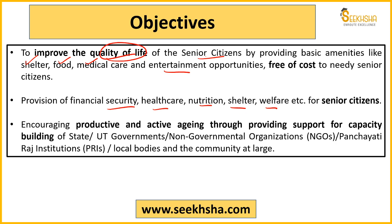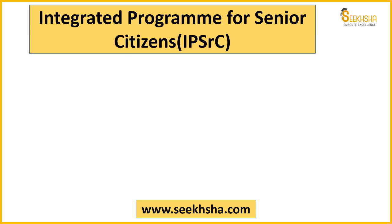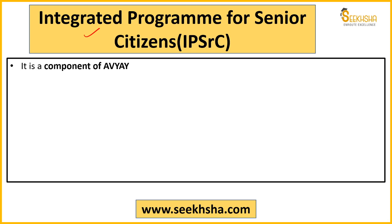इस scheme का एक सबसे important component है सबको साथ लेकर चलना — यानी productive and active aging को promote करना। Aging को रोका नहीं जा सकता, इसलिए capacity building की जरूरत है। Central government अकेले नहीं कर सकती, इसलिए state governments, NGOs, Panchayati Raj institutions, और local bodies को साथ लेकर community development की जाएगी। इसी के अंदर एक बहुत important program है — Integrated Program for Senior Citizens।